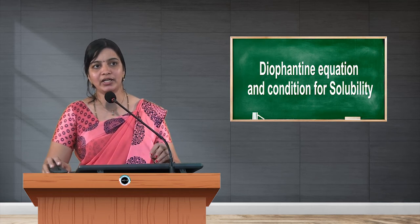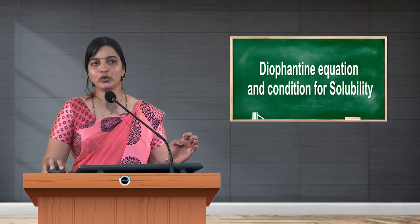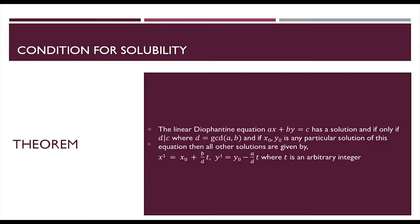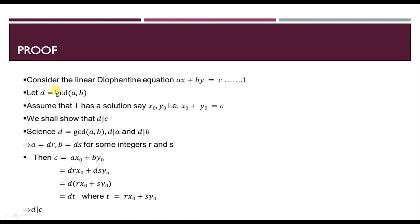We consider the linear Diophantine equation ax plus by equal to c, and let d be the GCD of a and b. We assume that equation 1 has the solution x naught, y naught — that is, ax naught plus by naught equal to c. We have to show that d divides c. Since d is the GCD of a and b, we can say that d divides a and d divides b.